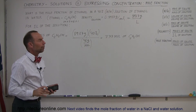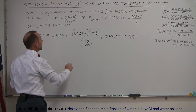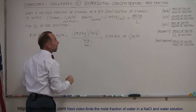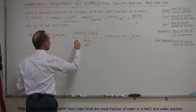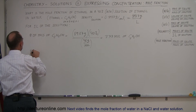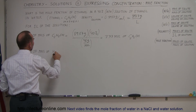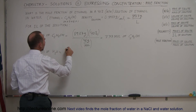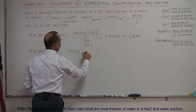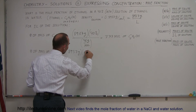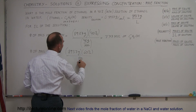Now we need to know the number of moles of the water in the solution. We can do the same equation, but instead of taking 40%, we're now going to take 60%, because 60% of the mass of one liter of solution is water, and divide that by the molar mass of water. So the number of moles of H2O equals the total mass of one liter of solution, 893.7 grams, times 60%, divided by the molar mass of water, which is 18 grams per mole.